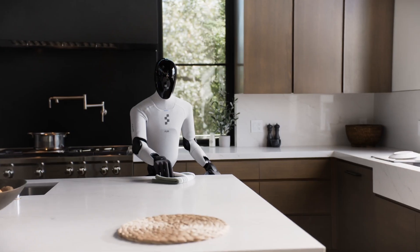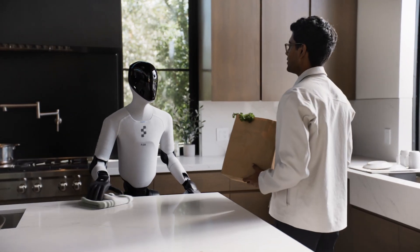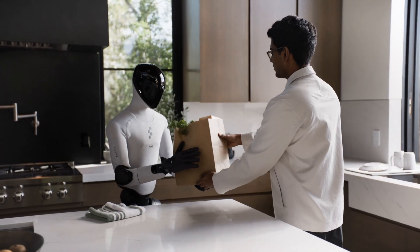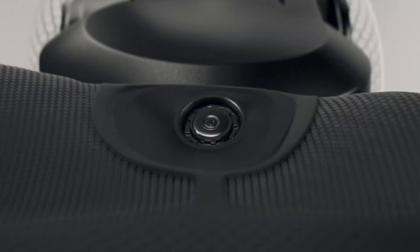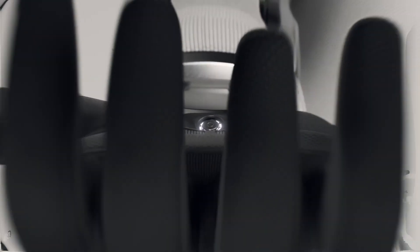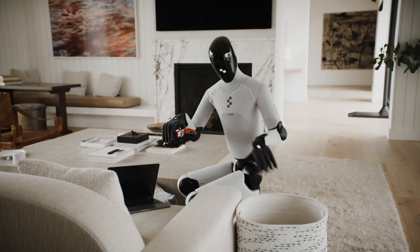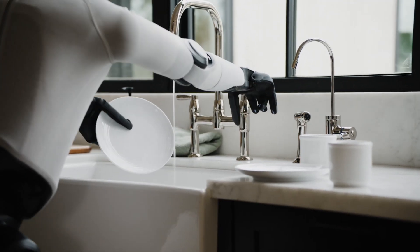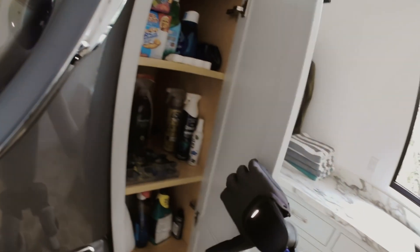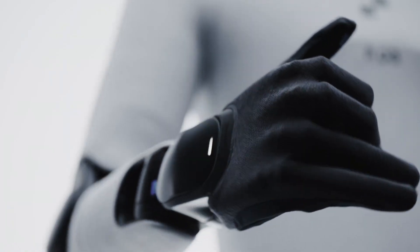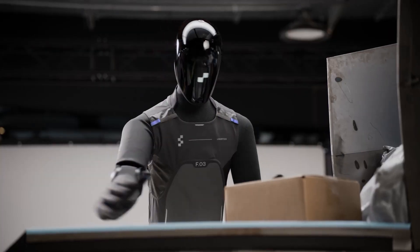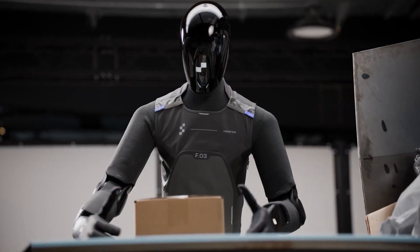That matters because cluttered home environments are chaotic, and small delays in perception can throw everything off. But the big innovation is in the hands. Each hand now includes an embedded palm camera that gives Helix a close-range visual stream even when the main cameras can't see, like when it's reaching deep into a cabinet or working inside a narrow machine space. That means constant adaptive control even when visibility drops to zero.